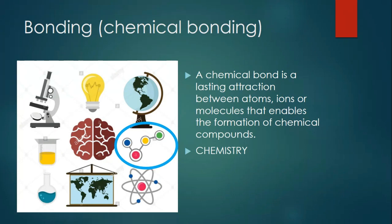Okay, next one is bonding, chemical bonding. A chemical bond, this is a structure. This is the, it represents the structure of a chemical bond. A chemical bond is a lasting attraction between atoms, ions, or molecules that enables the formation of a chemical compound.